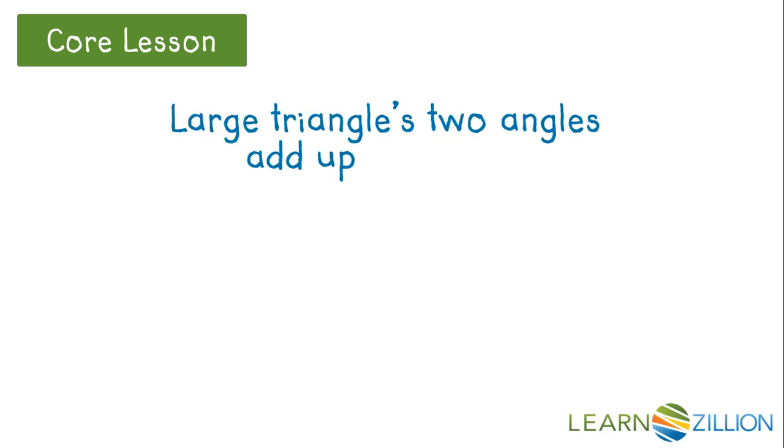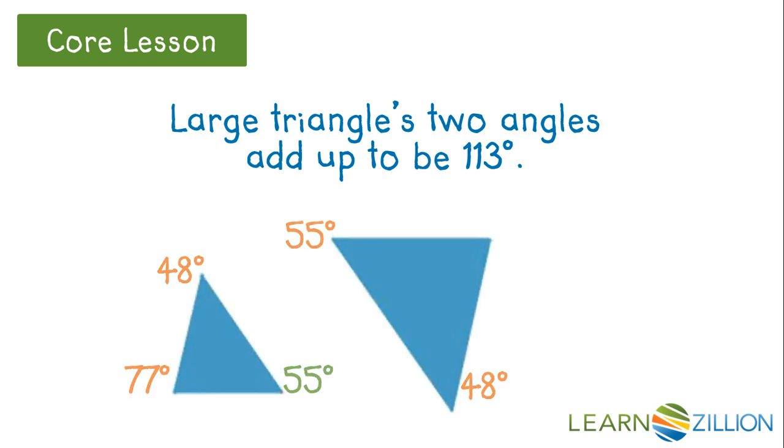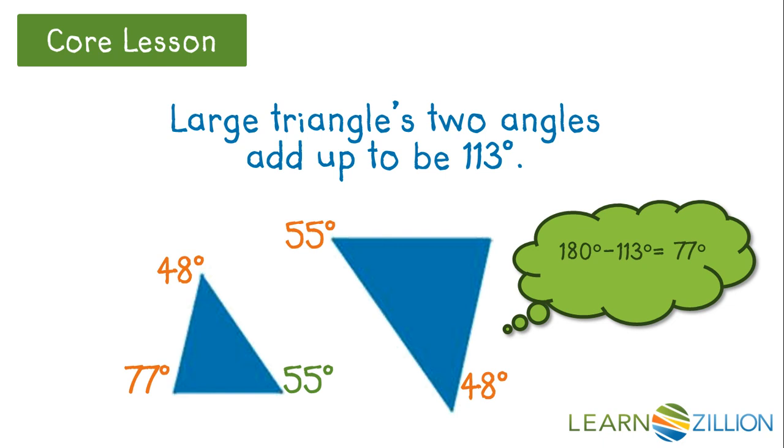So the large triangle's two angles add up to be 113 degrees. Would the third angle still be the same as the third angle of the smaller triangle? So if we take 180 degrees and subtract 113 degrees, we get 77.